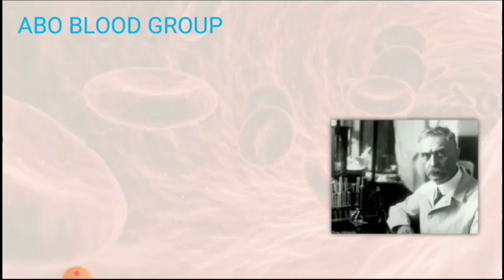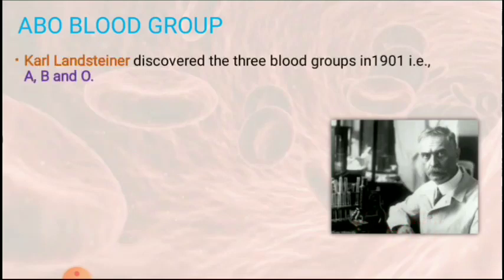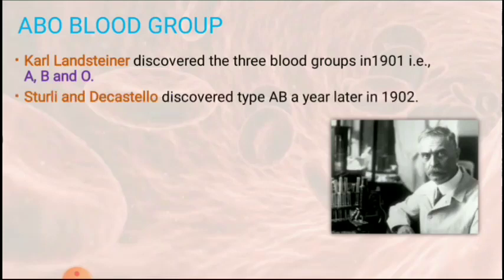Let us see them one by one. Under the ABO blood grouping system, there are 4 types of blood groups: blood group A, B, AB, and O. The person credited for this blood grouping system is Sir Karl Landsteiner. Landsteiner discovered 3 blood groups in the year 1901 — blood group A, B, and O. The 4th blood group, AB, was discovered by D. Castello and Sturley in the year 1902.